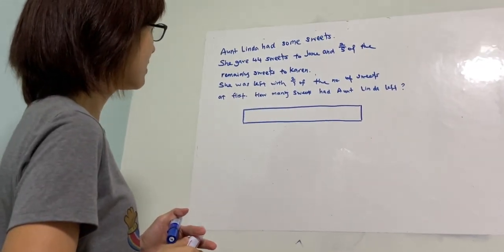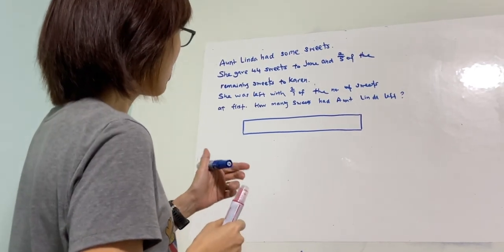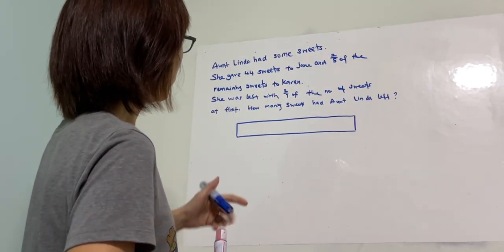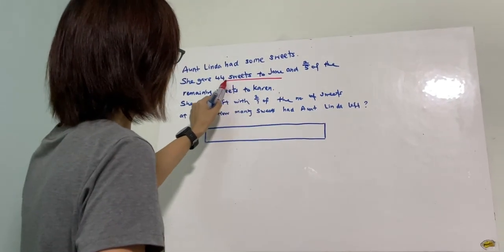Okay, so for this question it says that Aunt Linda had some sweets. She gave 44 sweets to Jane and two-fifths of the remaining sweets to Karen. So first of all for this question, we need to address the number of sweets that were given to Jane.